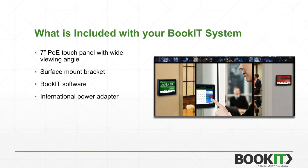When you purchase the BookIt system, you get our 7-inch POE touch panel. Those are IPS LCD panels with great off-axis viewing, a surface-mount bracket, the BookIt software, and an international power adapter if you don't have POE available. BookIt is Wi-Fi enabled, so if you can't get a wired Ethernet cable to it, that is an option as well. You also get a two-year hardware warranty and one-year software maintenance.